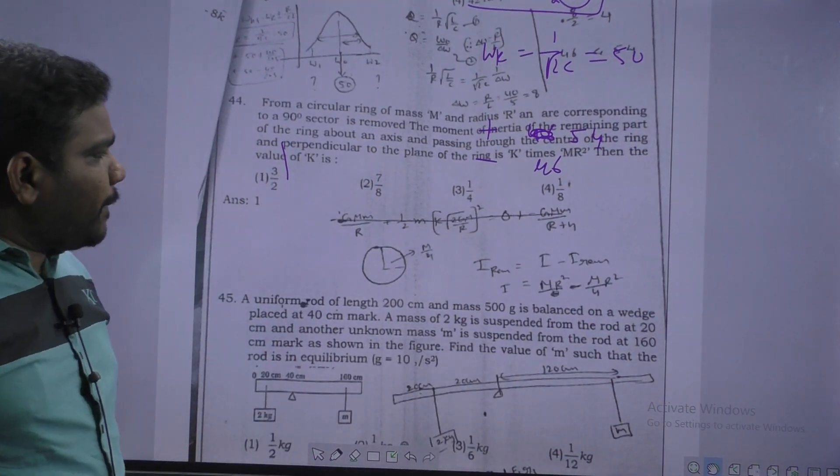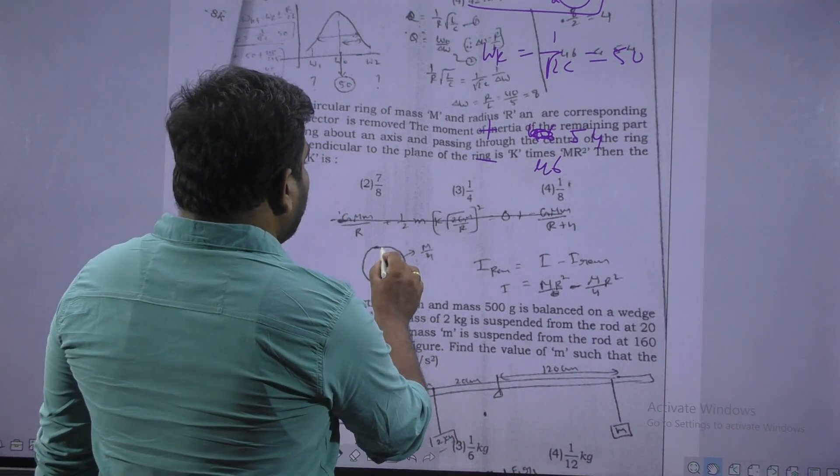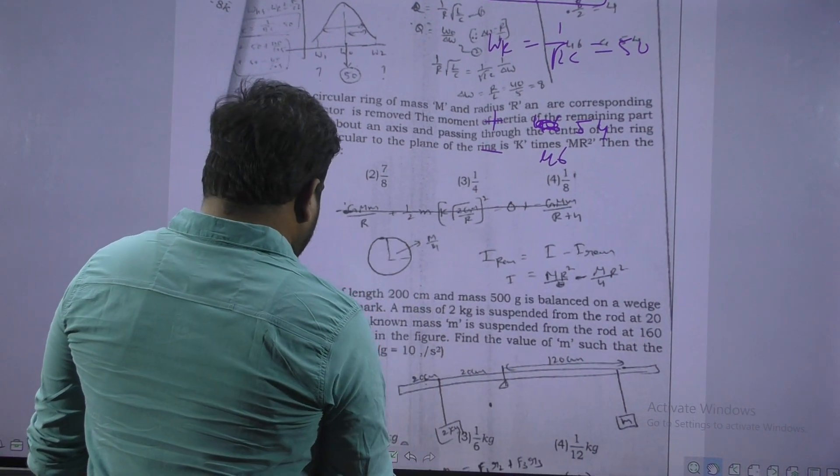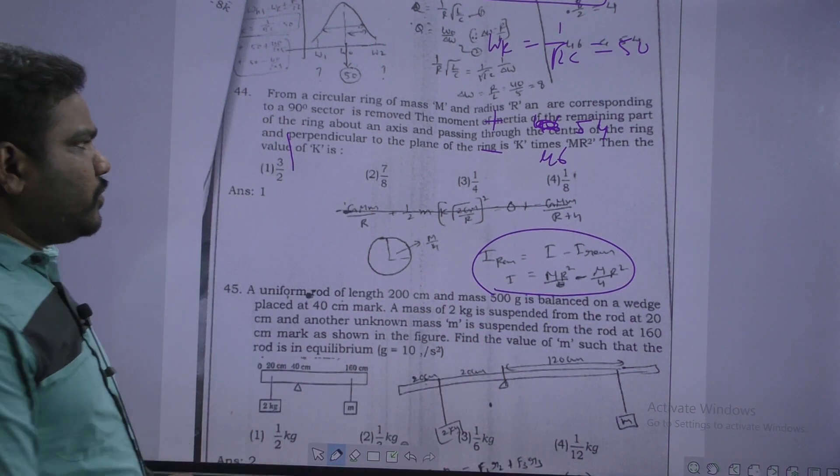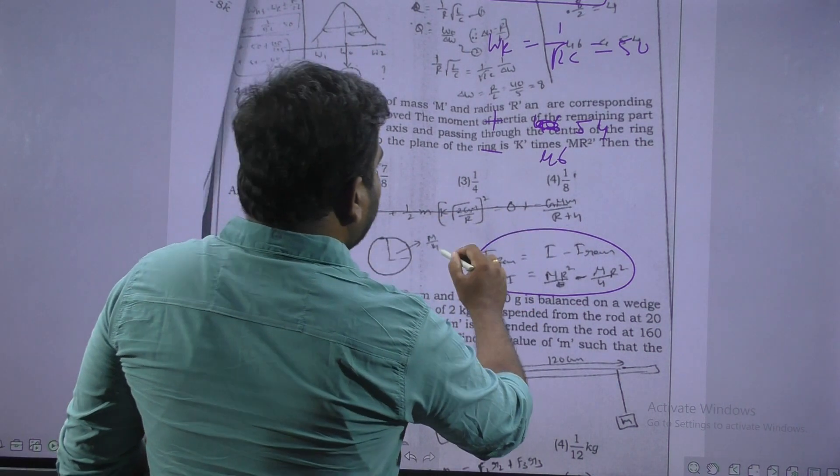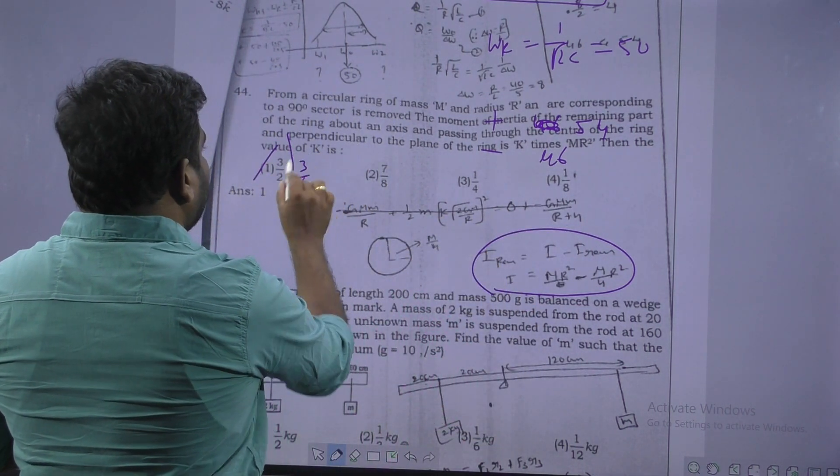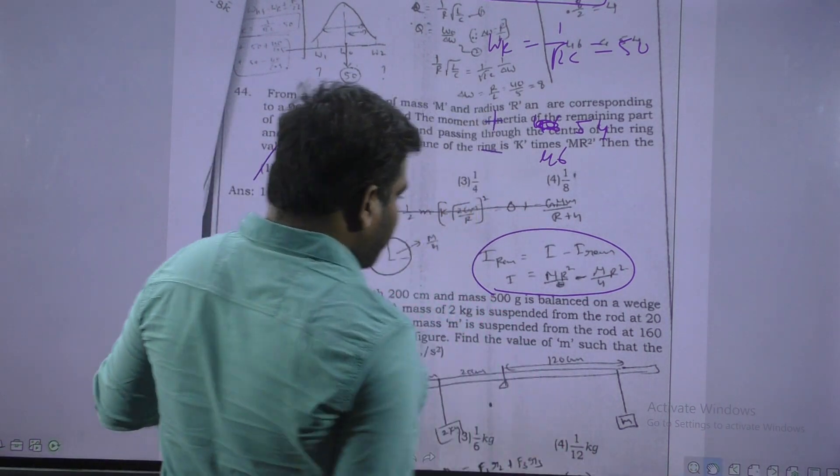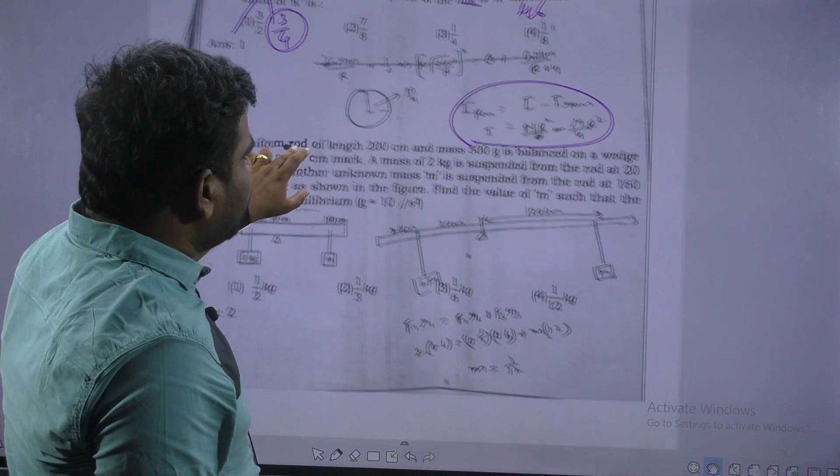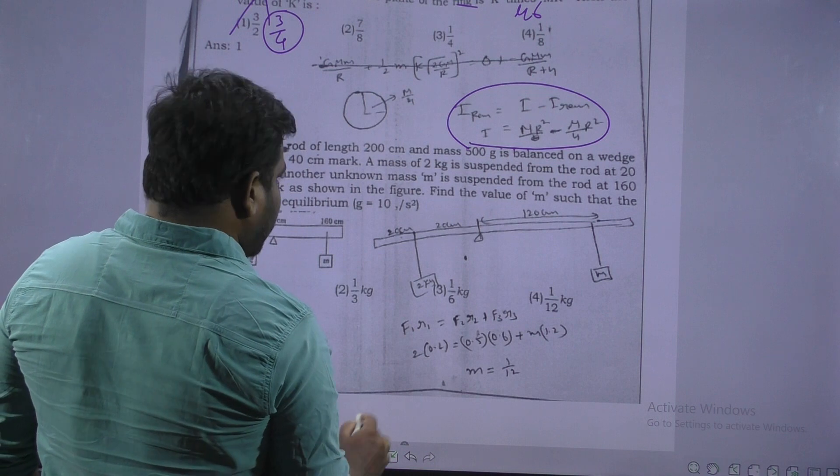Next. This is a moment of inertia problem. 1 fourth is removed. Remaining 3 fourth is there. Direct question. So this is option, 3 fourth. So right mark 3 by 2. This is 3 fourth.